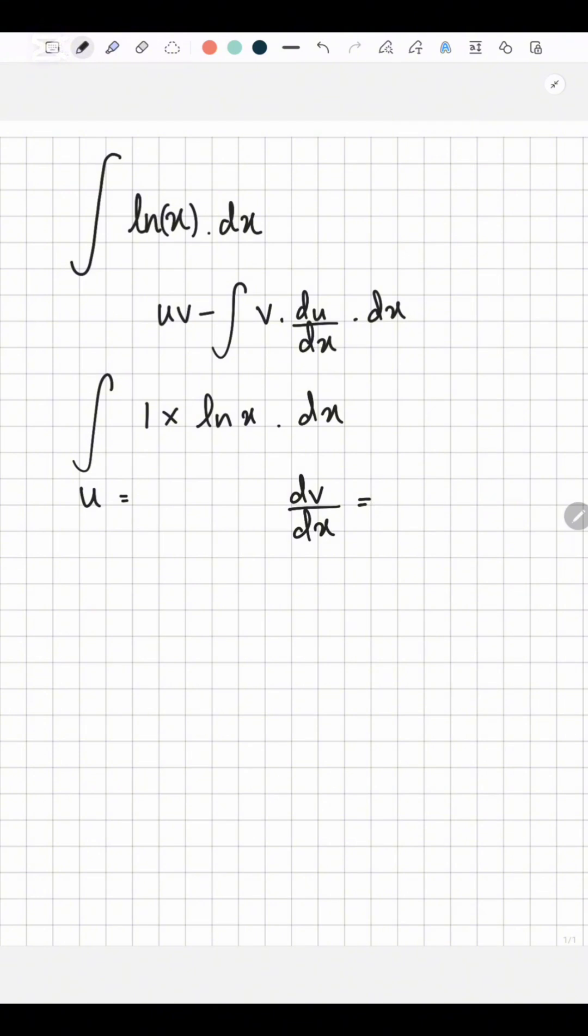So we take the term as U, the term that can be easily differentiated. We don't know what the integration of ln(x) is, right? But we know what's the differentiation. So we are going to take ln(x) as U and dV/dx as 1.